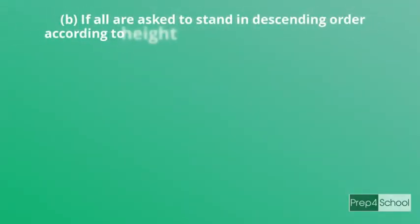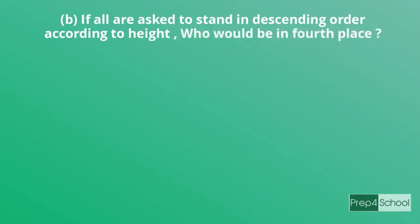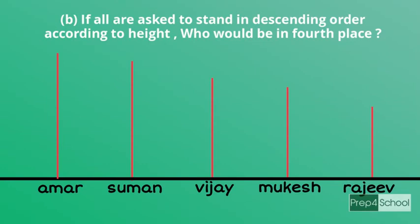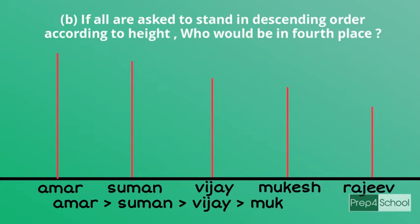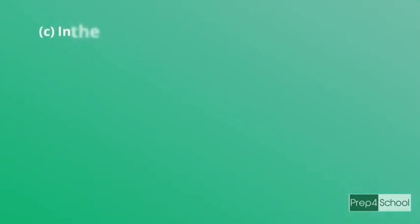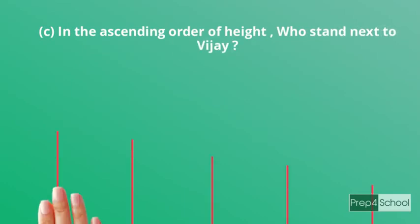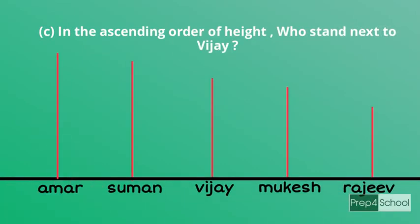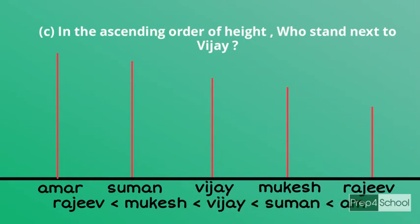Question two: if all are asked to stand in descending order according to height, who would be in fourth place? The descending order is Amar > Suman > Vijay > Mukesh > Rajiv. Counting from Amar, the fourth place is Mukesh. Question three: in ascending order of height, who stands next to Vijay? Ascending order: Rajiv < Mukesh < Vijay < Suman < Amar.